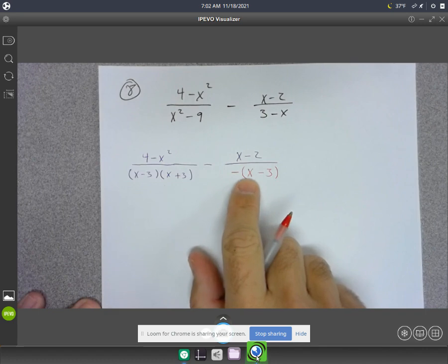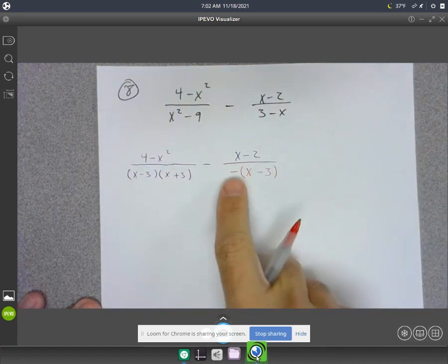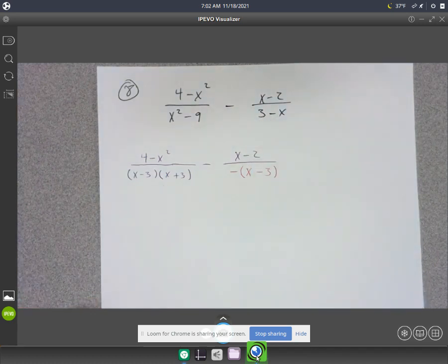If you put the negative back in, negative 1 times x would give you that negative x. Negative 1 times negative 3 would give you that positive 3.